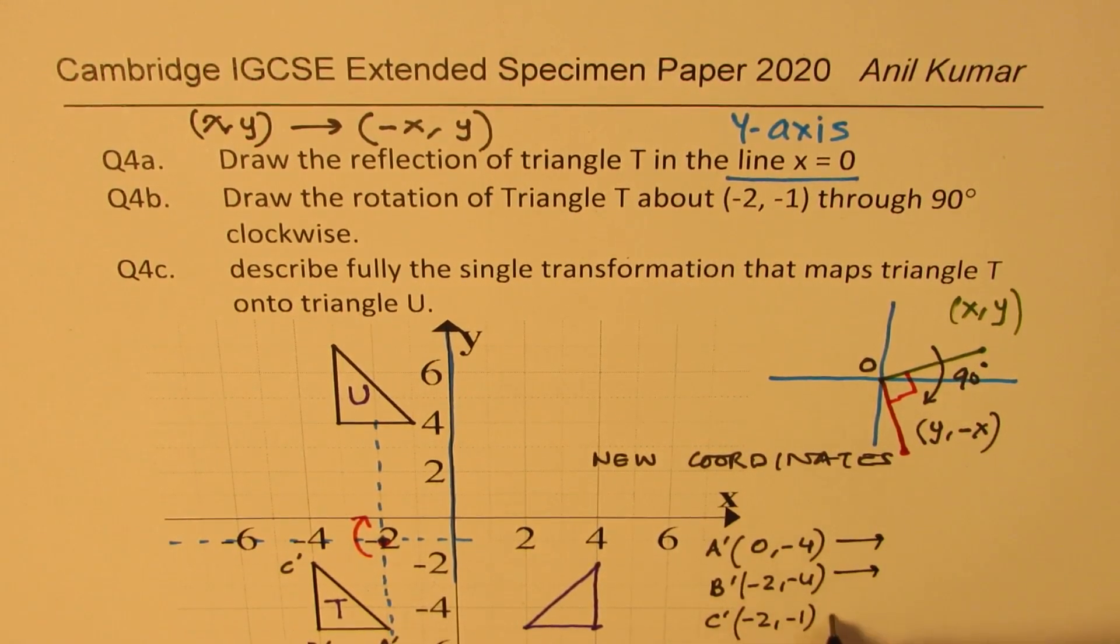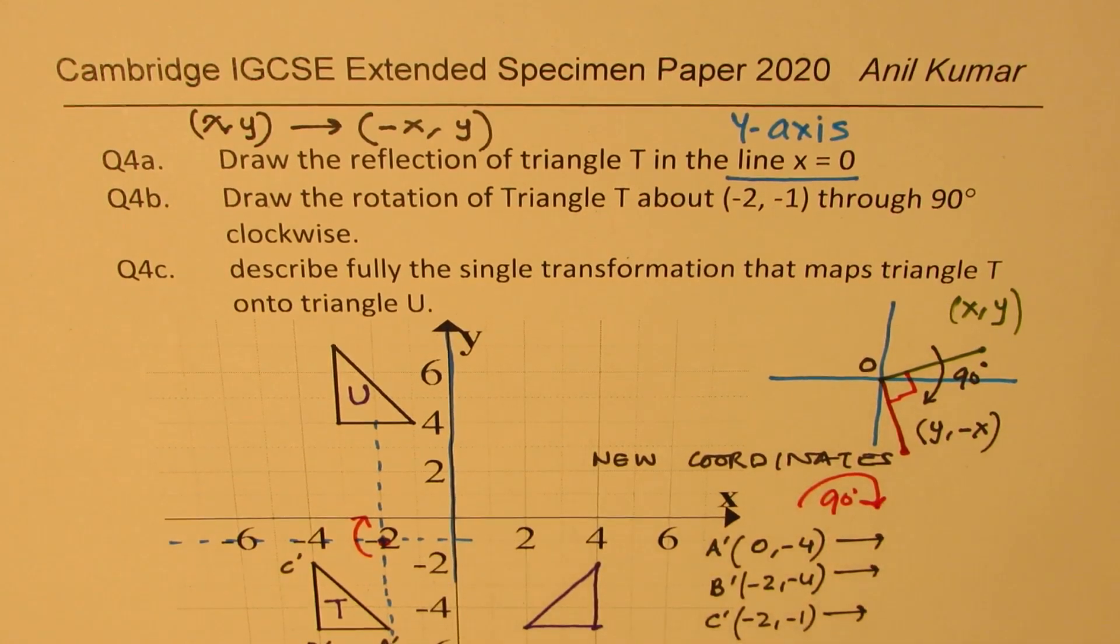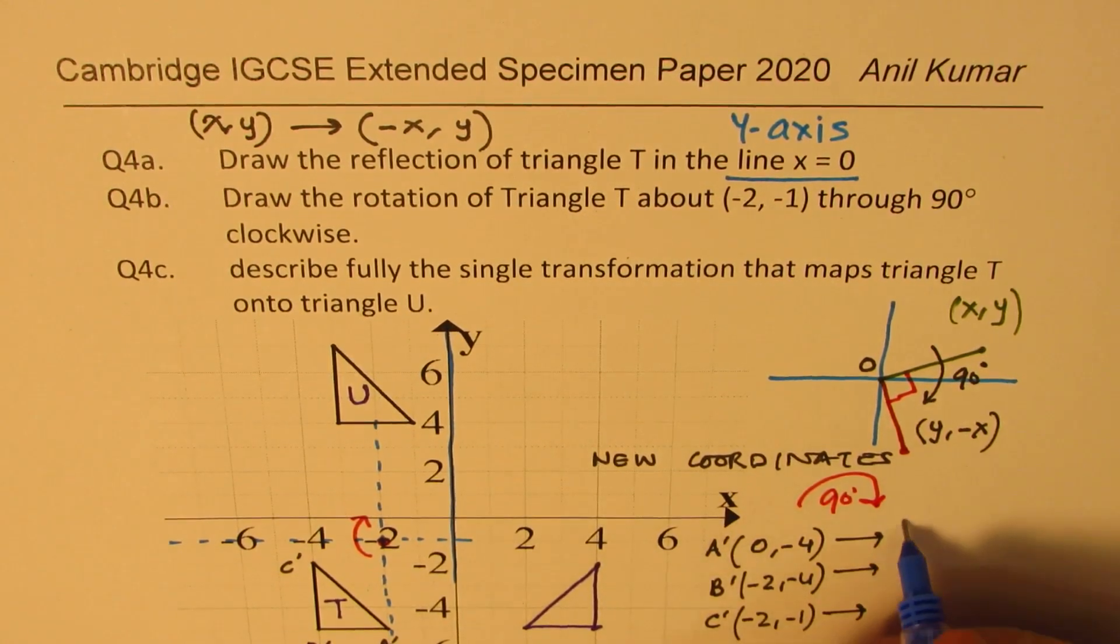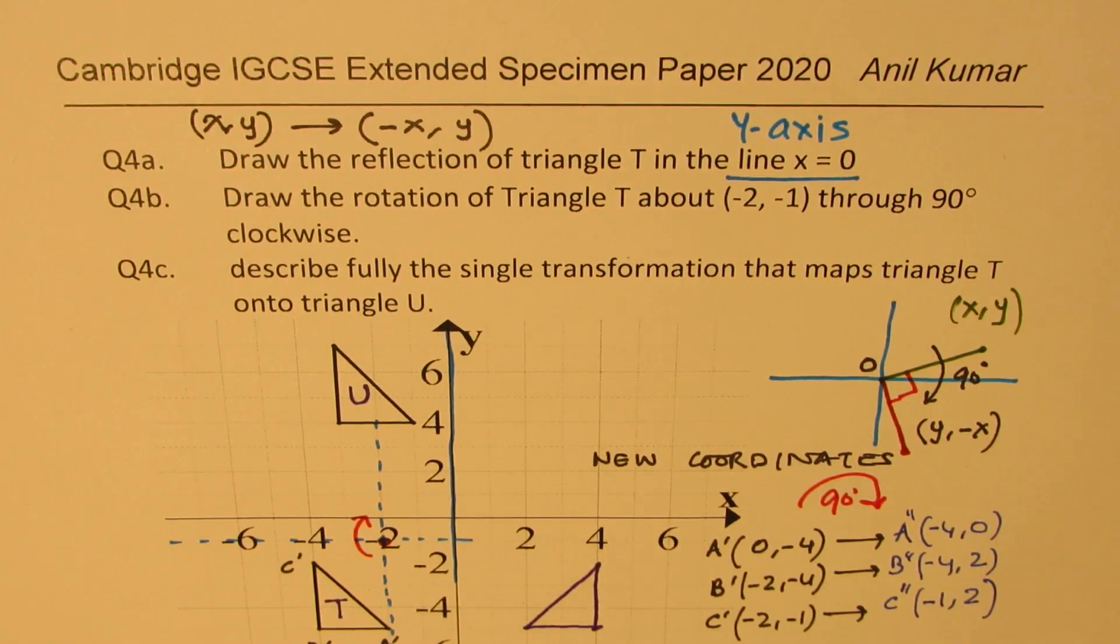Now, after the rotation, which is 90 degrees clockwise, what happens? These points, so we say A double dash will be, they will swap. So we get minus 4, 0. As far as B is concerned, we get minus 4 and this 2 becomes positive. For C double dash, the image will be at minus 1 and 2. So those are the new points for us. Let's plot these points now and get our answer.